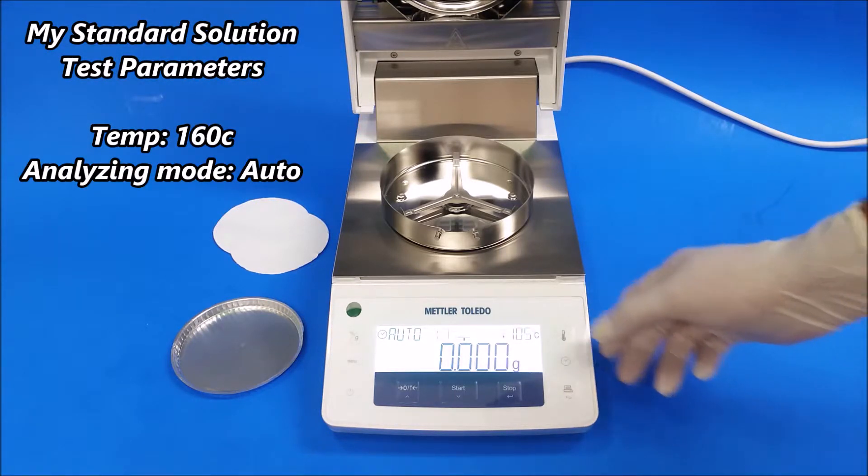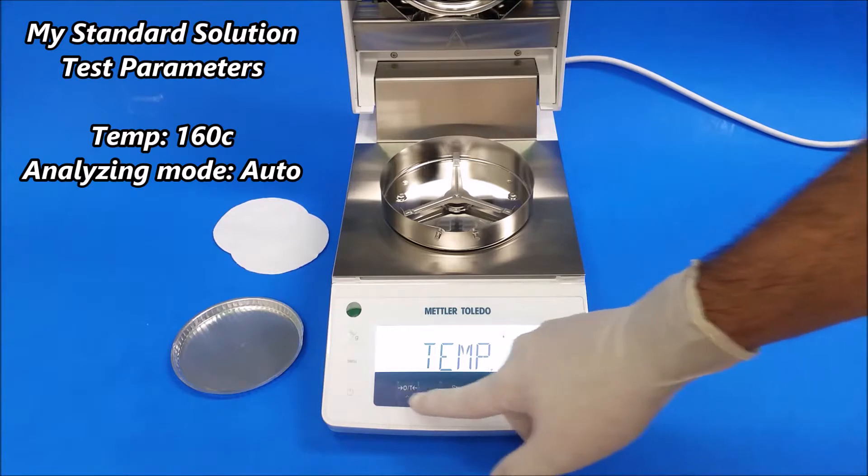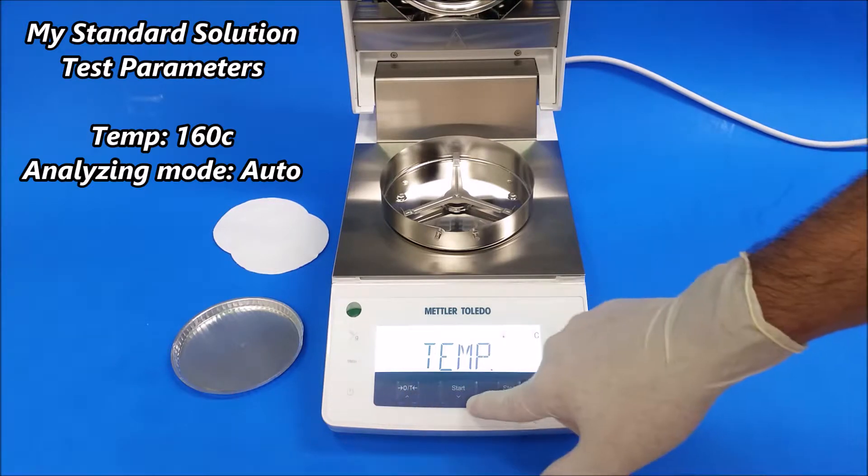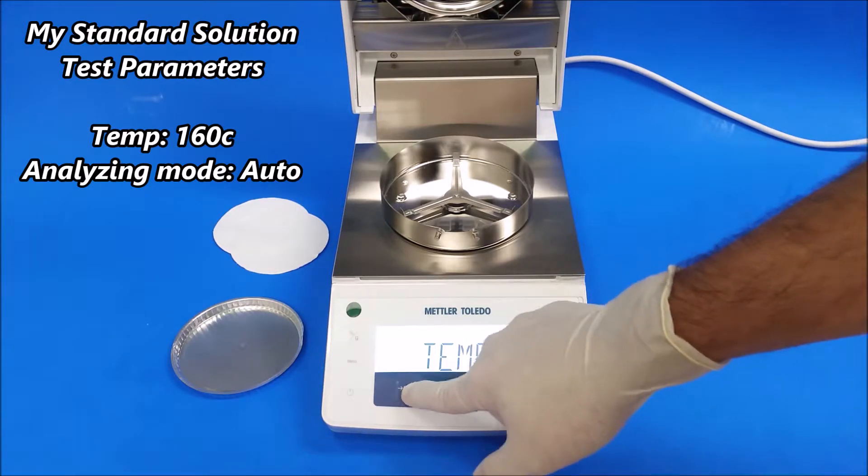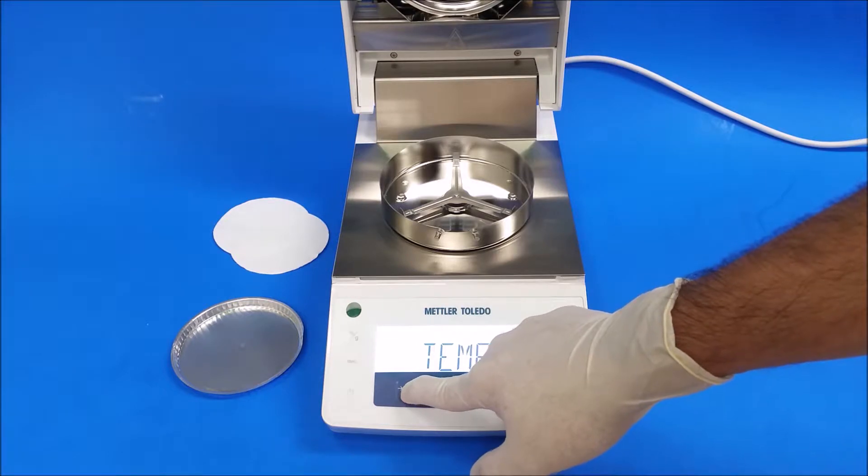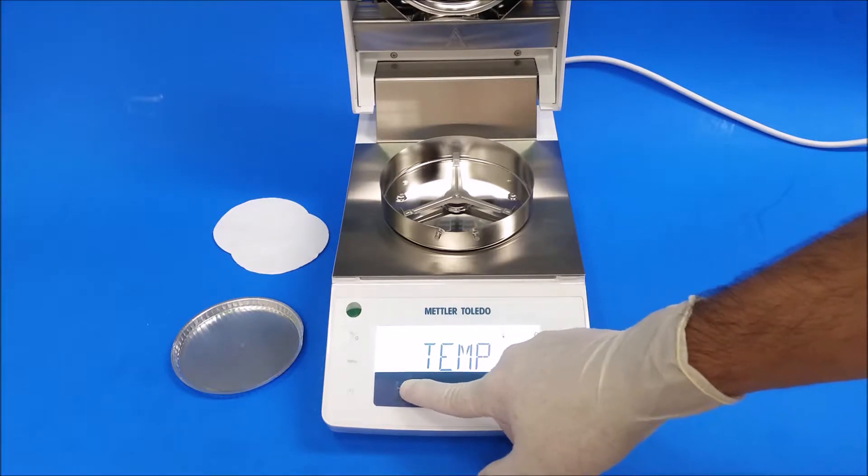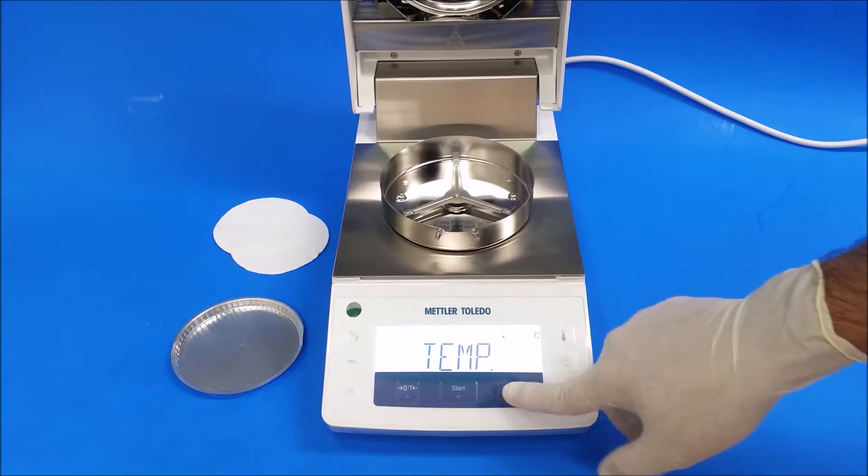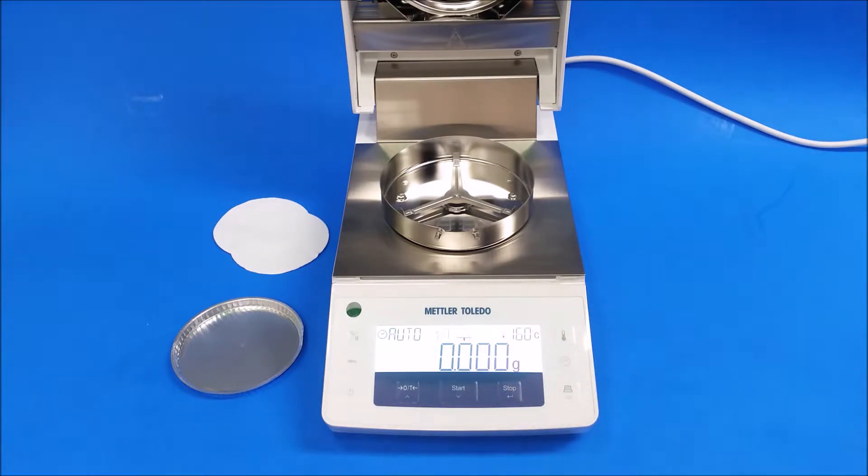There's arrow keys here, so there's an up arrow and here's a down arrow. So it's 160. Okay, now that we have our test parameter set up.